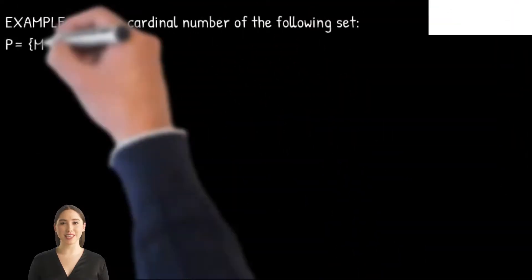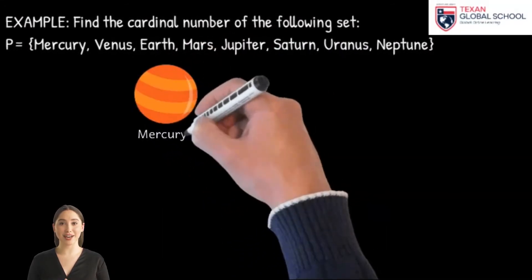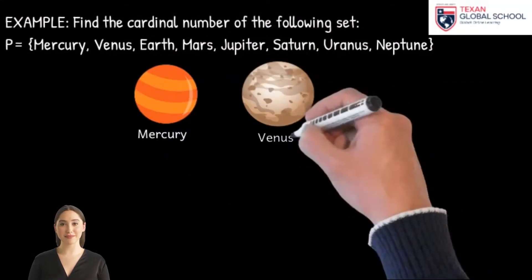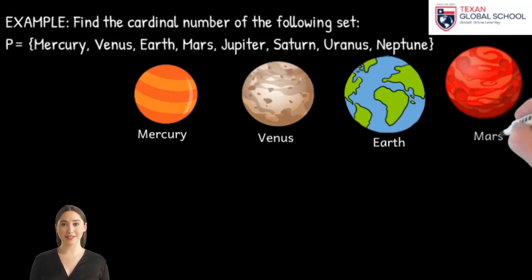Let's see another example. We have to find the cardinal number of the set P. Its elements contain planets of the solar system. Do you remember all these planets? Let's draw them and write their names.